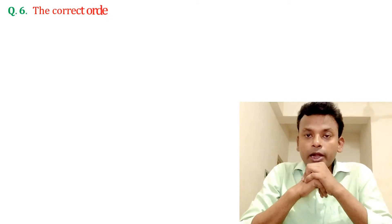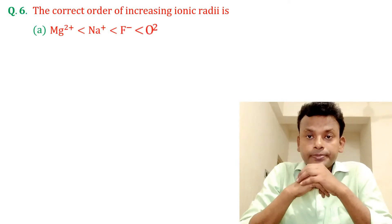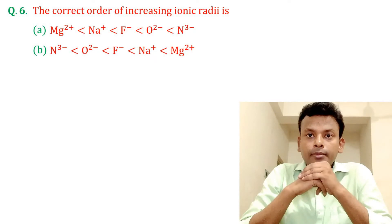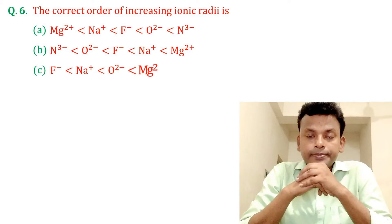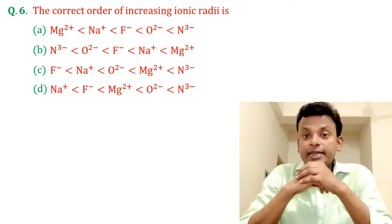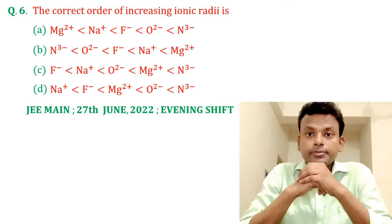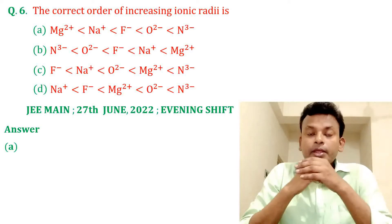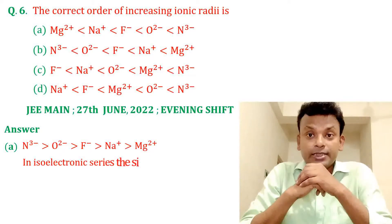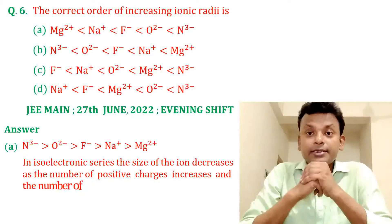Question 6: The correct order of increasing ionic radii is — option A, option B, option C, and option D. This question was set in JEE Main 27th June 2022 evening shift. Answer: option A is the correct answer. In an isoelectronic series, the size of the ion decreases as the number of positive charges increases and the number of negative charges decreases.